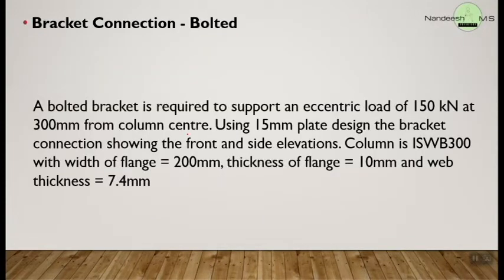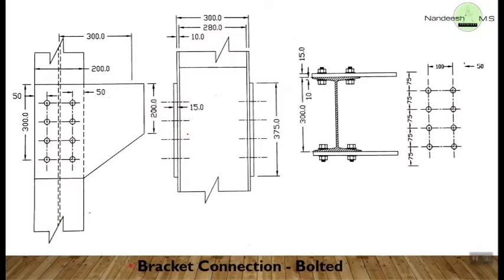First we will take up bolted connections. You might get a question like this where you are asked to design bracket connections. The eccentric loading as well as eccentricity will be mentioned, with which you will have to design the bolts. Generally bolt diameter also will be specified; if it is not specified you are welcome to assume it. In this question there is an eccentric loading of 150 kN acting at an eccentricity of 311 mm from the column center, and using a 15 mm plate we are supposed to design a bracket connection. The column is ISWB300 and its specifications are given.